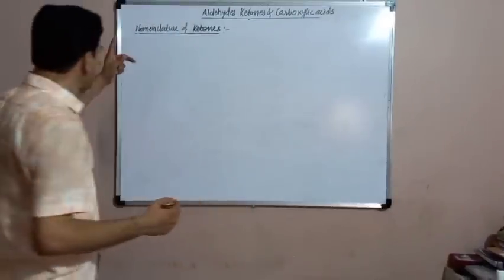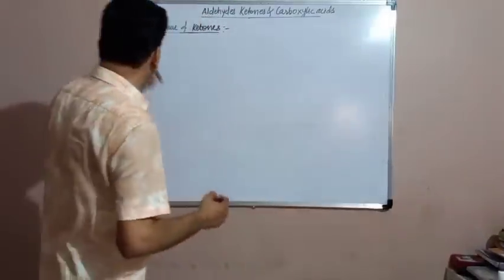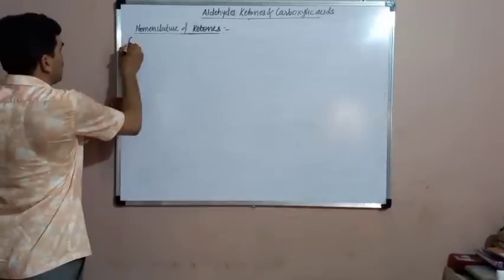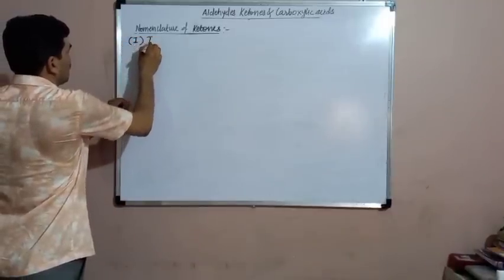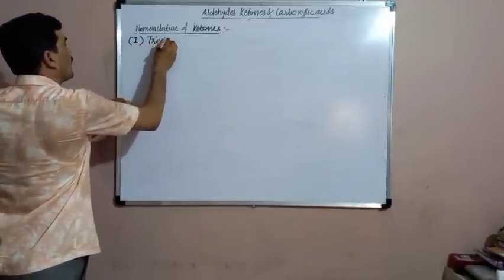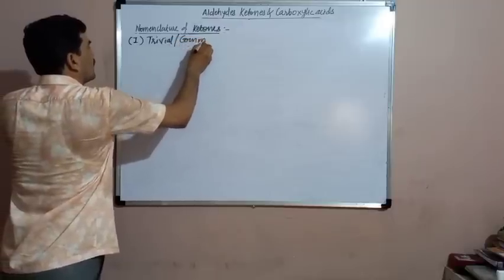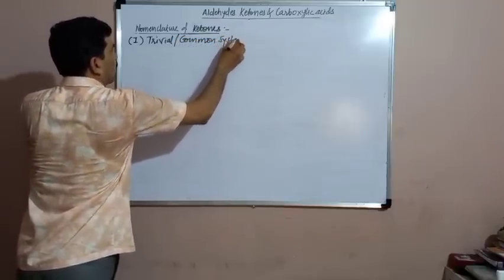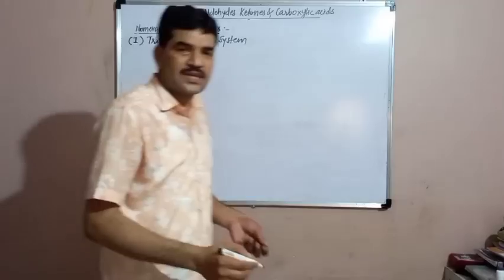Now the next topic is the nomenclature of ketones. Today we are going to study the nomenclature of ketones. The nomenclature of ketones is possible by two methods: the trivial or common system, and the IUPAC system.